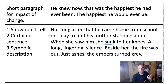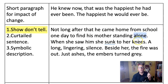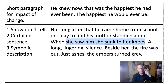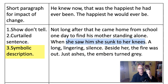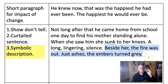'Not long after that, he came home from school one day to find his mother standing alone. When she saw him, she sunk to her knees, a long lingering silence. Beside her, the fire was out, just ashes, the embers turned grey.' So we can infer from this - because we've been shown and not told - that the father is no longer there. The word 'alone' emphasises that to us. We know that something is very wrong because she sunk to her knees. This is also done through sibilance again, which links us back to that sinister sibilance we had before, which we associated with the father. What the character can remember is symbolic - not just describing things because those are the things that were there, but details that work to make us infer. The fire was out, just ashes, the embers turned grey - symbolic of the parents' relationship. For whatever reason, they must have split up at this point.